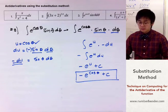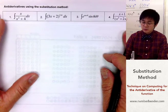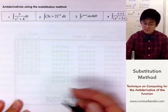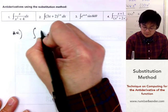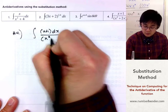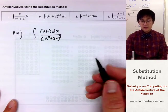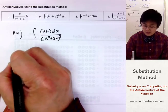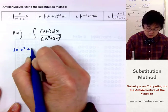Now let's answer the last problem, number four. We have the integral of x plus 1 all over x squared plus 2x raised to the third power dx. I'll modify the function right away, writing it as x plus 1 dx all over x squared plus 2x raised to 3. Here, x squared plus 2x inside the parentheses will be set as u. So u equals x squared plus 2x.